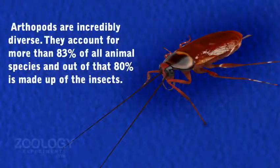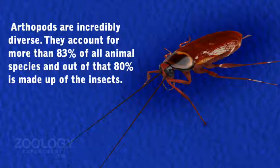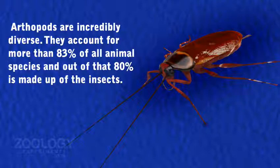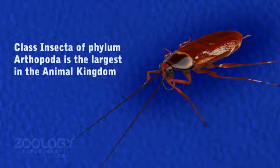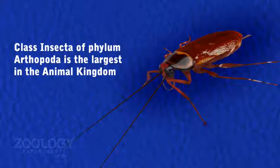Arthropods are extremely diverse. They account for more than 83% of all animal species, and out of that, 80% is made up of insects. Class Insecta of Phylum Arthropoda is the largest in the animal kingdom.